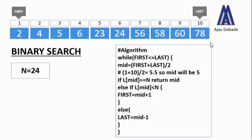In the algorithm there is a while loop with the condition first less than or equal to last. The first variable points to position 1 (number 2) and last points to position 10 (number 78). The condition is true since 1 ≤ 10. So we calculate mid as first plus last divided by 2, which is 1 plus 10 divided by 2 = 5.5. We take only the integer part, so the value of mid is 5.